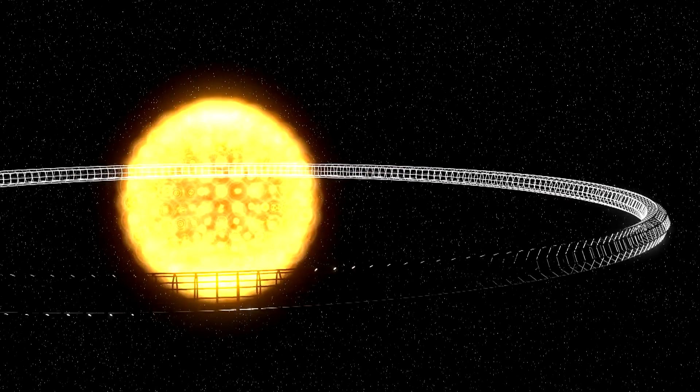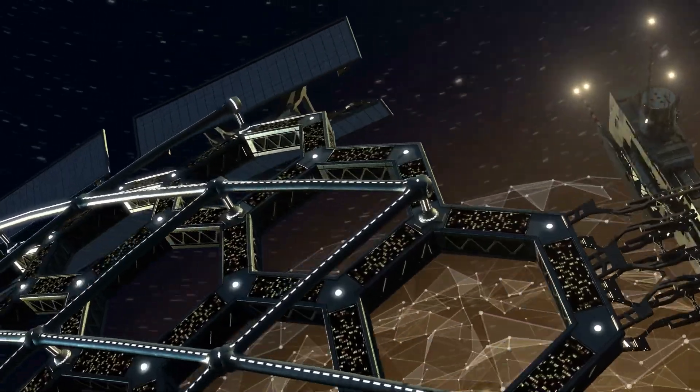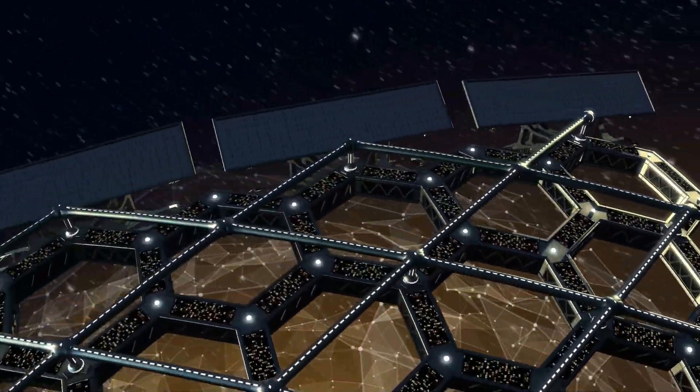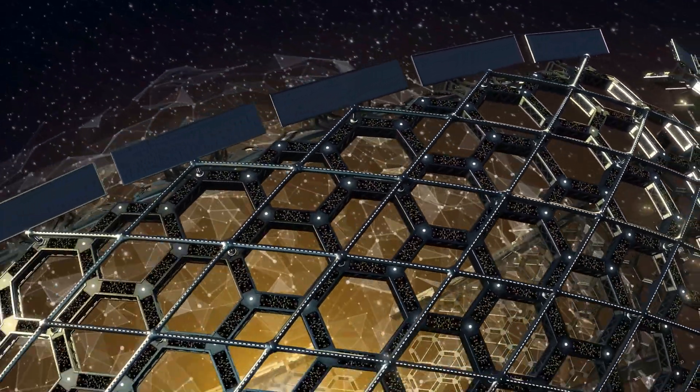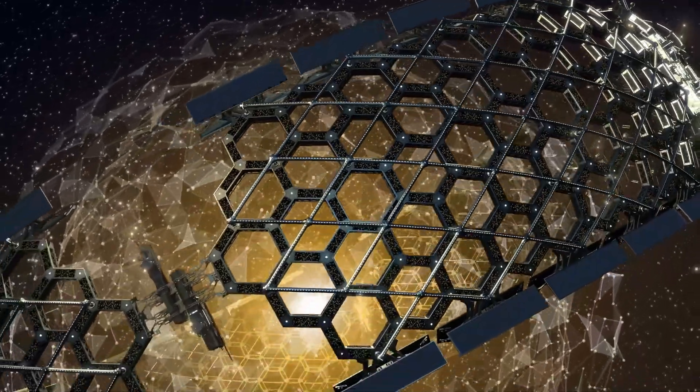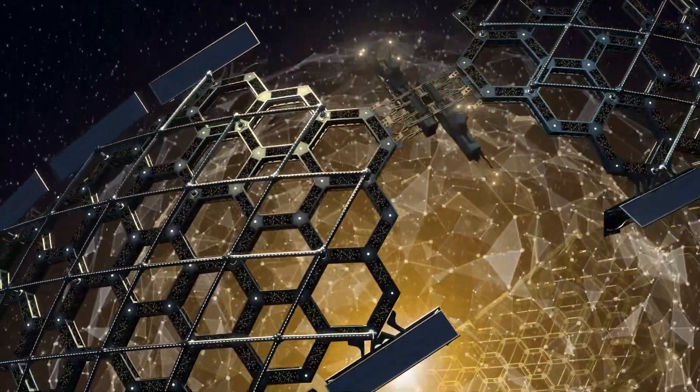The simplest of these megastructures would be a Dyson Ring. It would be made up of a ring of solar power collectors in orbit around its star with a radius of 100 million miles. But having just one ring wouldn't be enough.